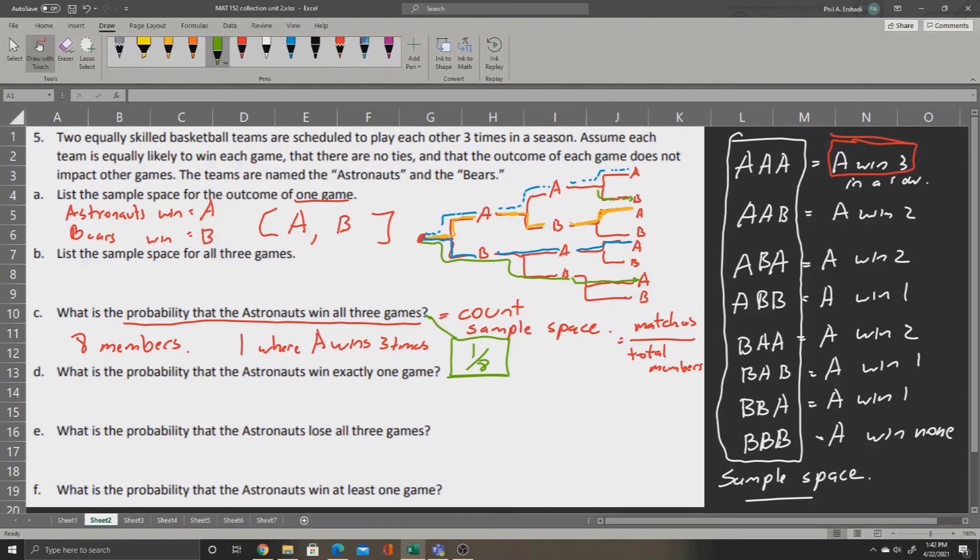We can do this again for part D. We are asked, what is the probability that the Astronauts will win exactly one game? Well, once again, we still have eight members. And in those eight members, let's count how many where the Astronauts win one game.